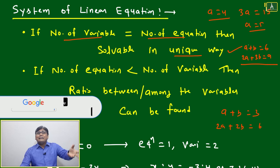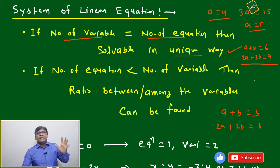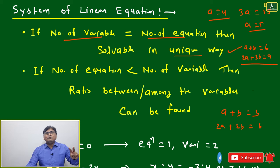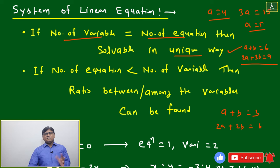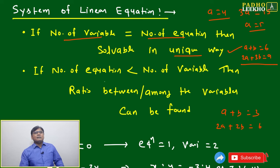When two independent linear equations exist between a and b, and only two variables a and b, and two equations, then we can say we will get the unique solution. This we know—I just gave a little revision.